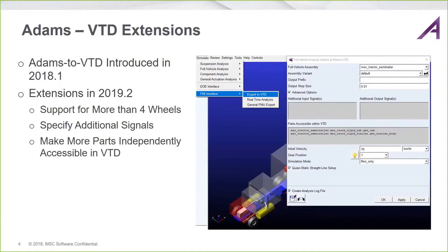Of course, those additional signals would have to be supported on the VTD model. We can assign other input signals for the Adams model to consume from the VTD environment. And the flip side is true — we can provide more than the standard signals from the Adams vehicle. Standardly we provide vehicle body states and wheel states, but we could also provide other signals to the VTD vehicle model from the Adams plant representing the physics.